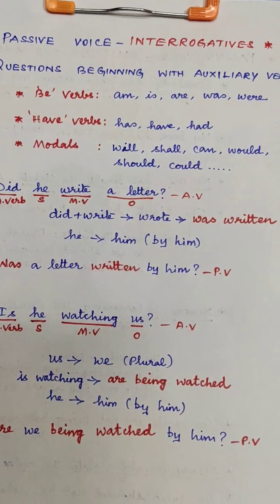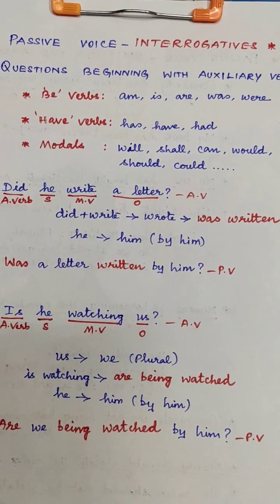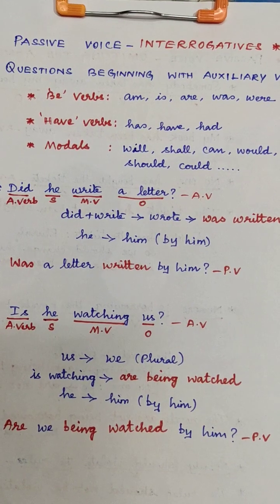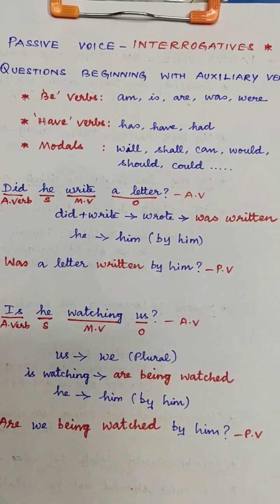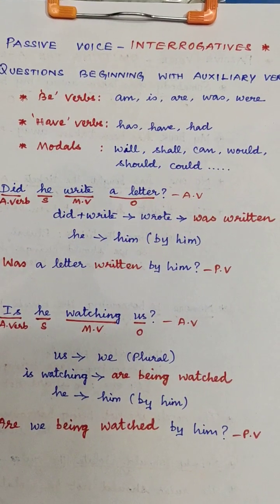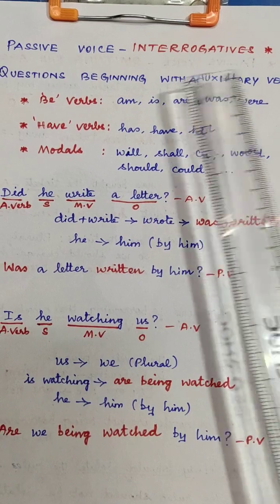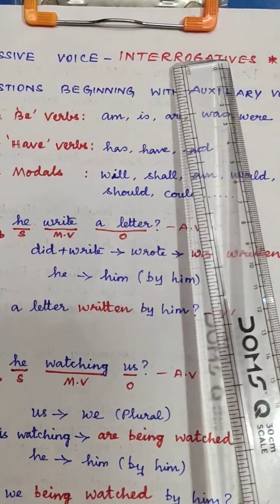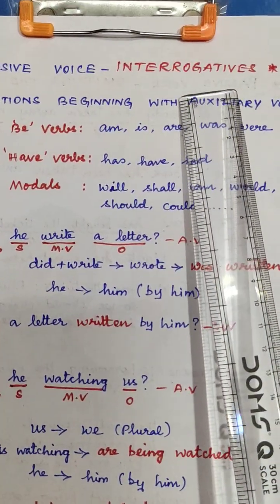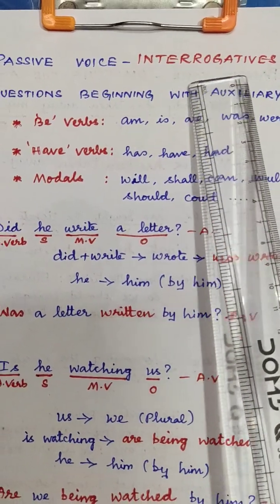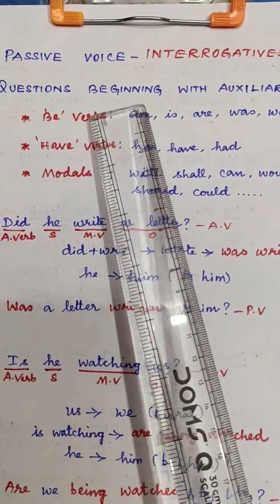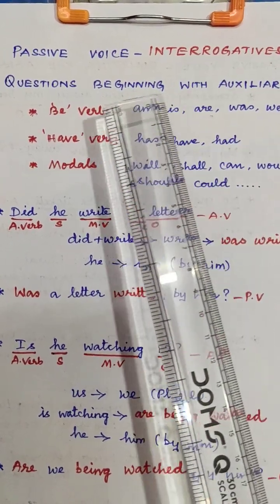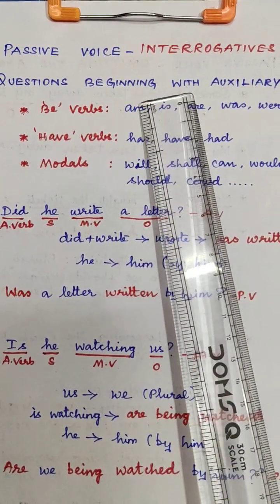Hi children, active to passive — we are going to give you an example. The next step is passive voice interrogatives. Interrogatives are questions. The sentence which is beginning with question words. So, there is a direct question word.